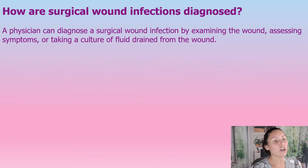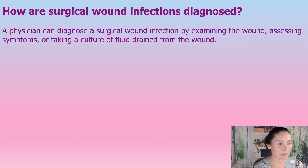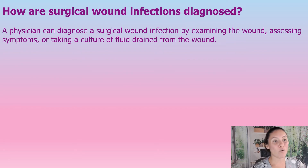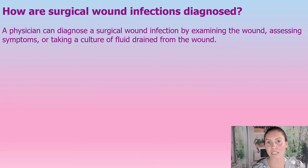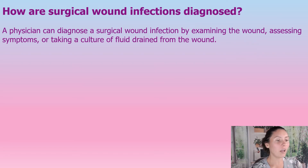How are surgical wound infections diagnosed? A physician can diagnose a surgical wound infection by examining the wound, assessing symptoms, or taking a culture of fluid from the wound. If you want to know more about how to recognize the signs and symptoms of infection — whether local or deep and spreading — check the link in the description below.